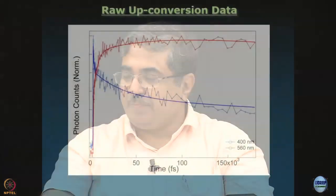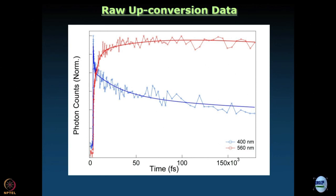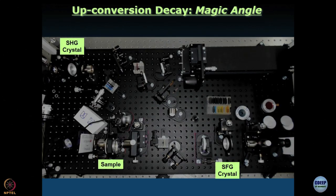This is an example of upconversion data — you can see the data points and the fitting curve we discussed in the previous module. The data quality here is definitely not as good as what TCSPC delivers; TCSPC gives unparalleled data quality, which is why it is so popular worldwide. But if you need better time resolution, you must use upconversion or something like a streak camera, which we will briefly discuss. The next topic is why polarization must be controlled and what can go wrong in an upconversion measurement, which we will take up in the next module.